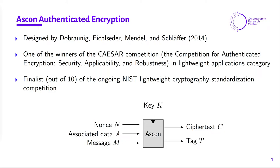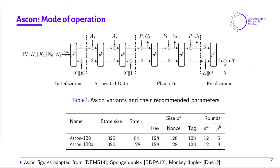The tag T provides integrity and authenticity for the nonce, associated data, and message. ASCON is based on the well-known sponge duplex mode of operation. There are four phases: the first phase is initialization where the secret key and the nonce are processed by the permutation P_A. Then we have the associated data processing, plaintext processing where we generate the ciphertext, and finally the finalization phase where we generate the authentication tag T.